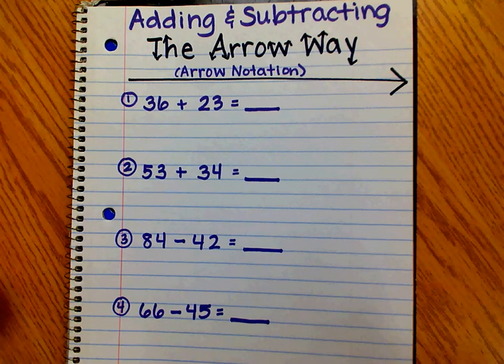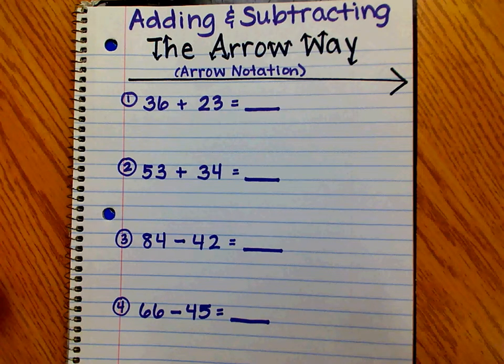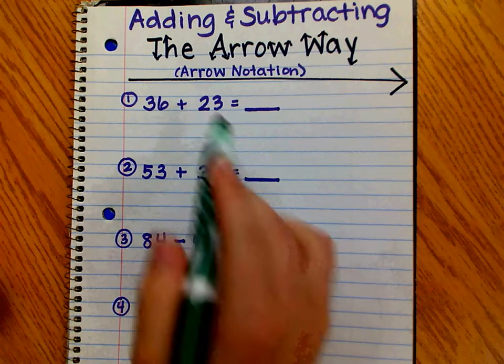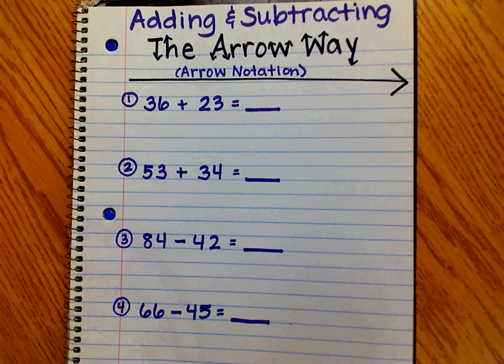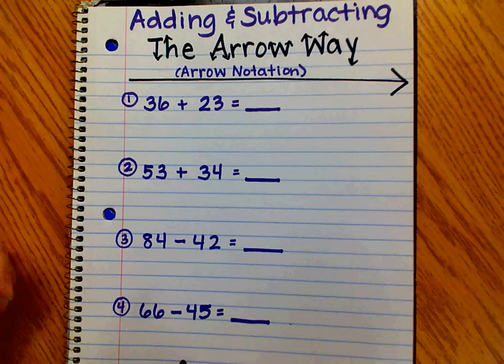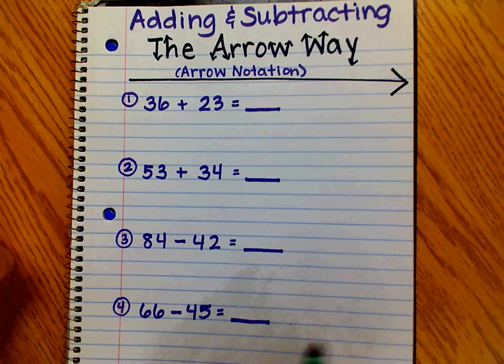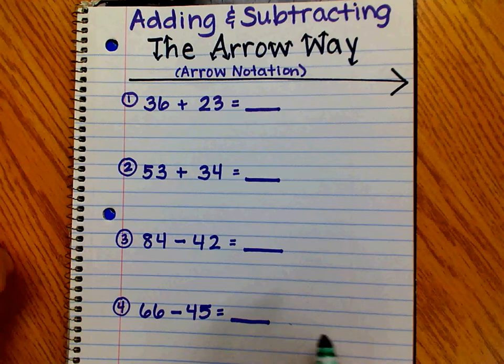One of the strategies we teach our scholars for adding and subtracting is called the arrow way. It's also called arrow notation. And when you add and subtract the arrow way, basically you're adding or subtracting the tens and then adding and subtracting the ones.